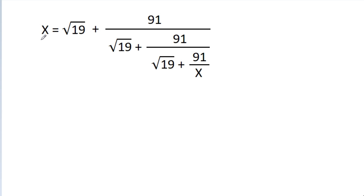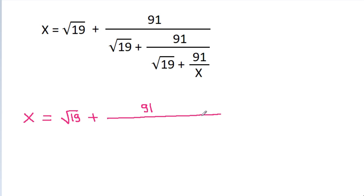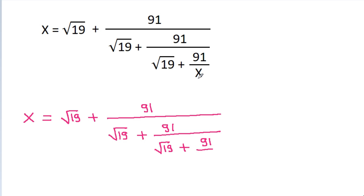In this video, we have given that x is equal to a square root of 19 plus 91 by a square root of 19 plus 91 by a square root of 19 plus 91 by x. And we have to find the value of x.